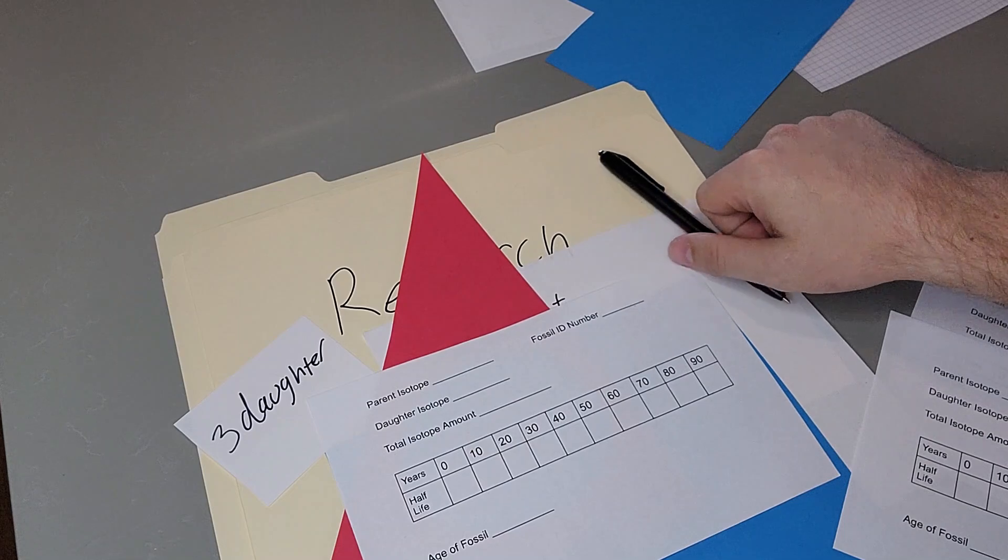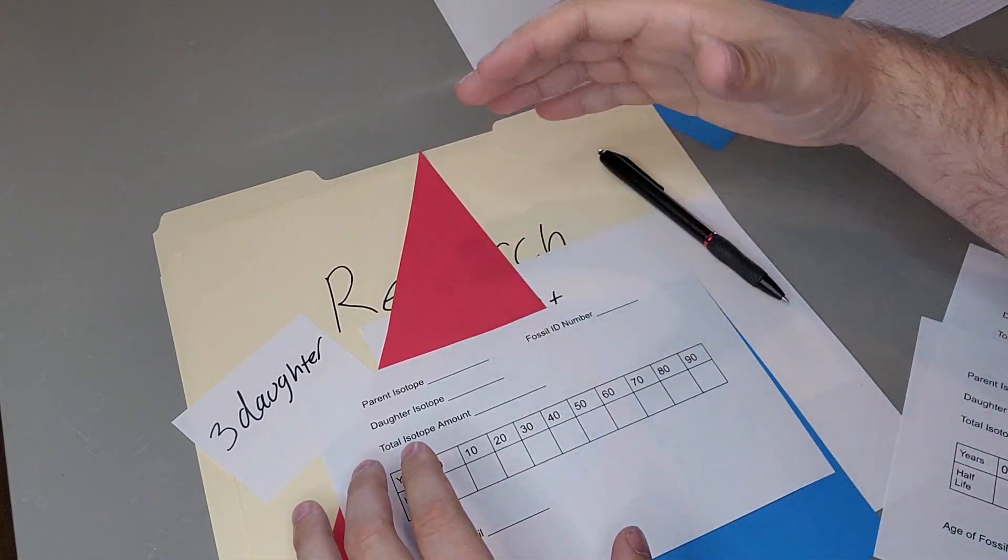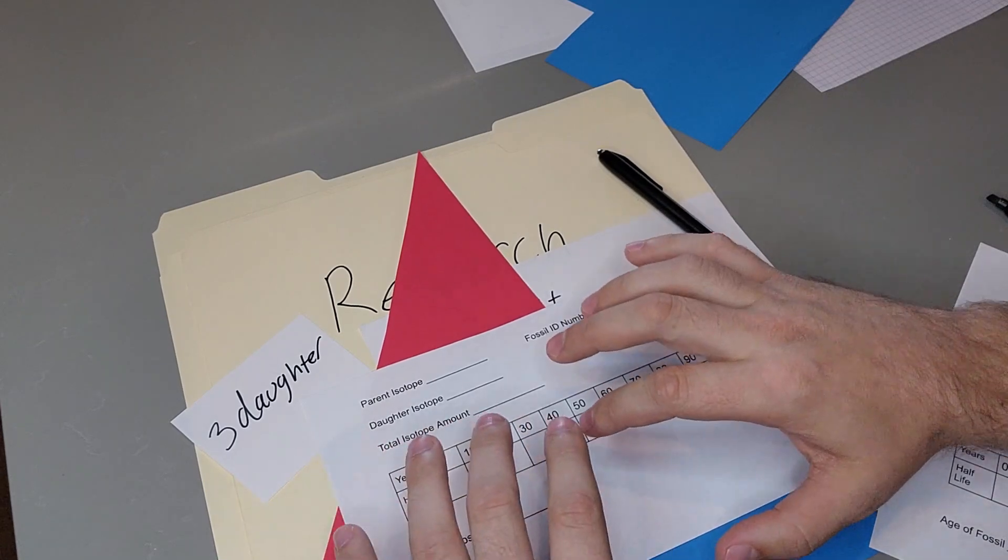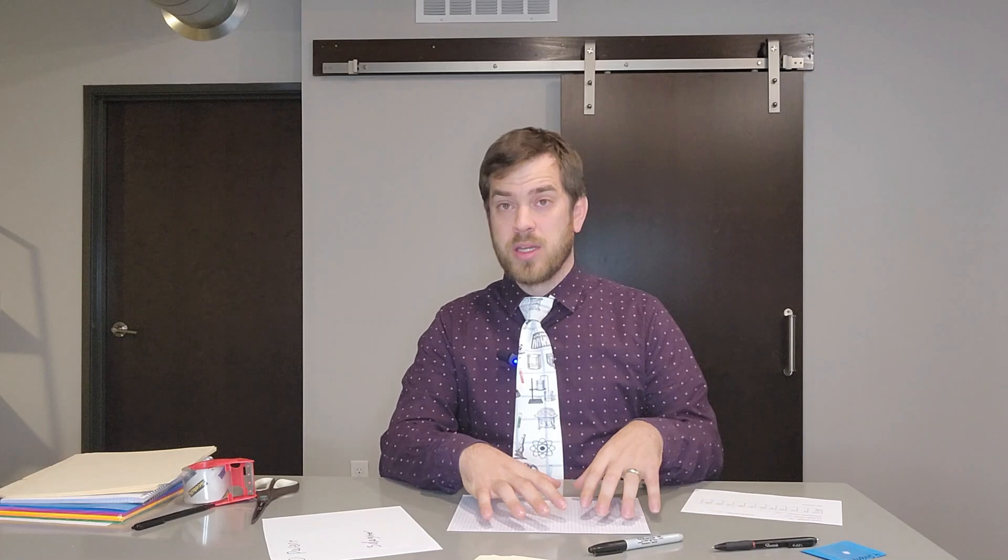But you can see this activity, even though it's simple at its core, you can end up modifying it a lot to fit the needs of whatever subject or standards you are trying to hit. Another thing you do in math is you can give them a year, so say 35 years, and have them make their own fossil that matches that. So how can you cut this up in a way to where somebody else were to look at the fossil, they would get between 30 and 40 years, or if you are in a more advanced class to make it more precise than that.